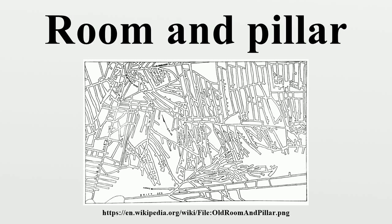Room and pillar, also called pillar and stall, is a mining system in which the mined material is extracted across a horizontal plane, creating horizontal arrays of rooms and pillars. The ore is extracted in two phases. In the first, pillars of untouched material are left to support the roof overburden, and open areas or rooms are extracted underground. The pillars are then partially extracted in the same manner as in the order pillar method. The technique is usually used for relatively flat-lying deposits, such as those that follow a particular stratum.